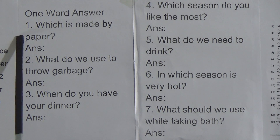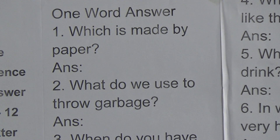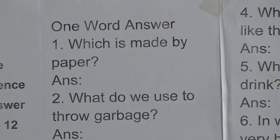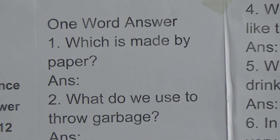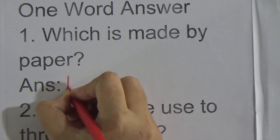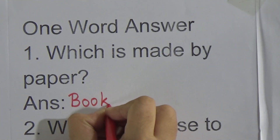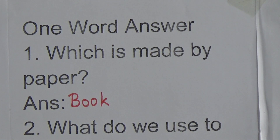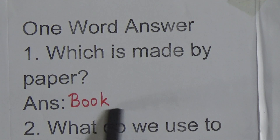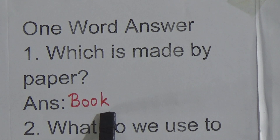Our number one question is: which is made by paper? The answer is book. We will write here — Book. Normally, we can't use a full stop in one word answer and we use a small letter, but I am using a capital letter here because this is Junior 1 class. That's why.